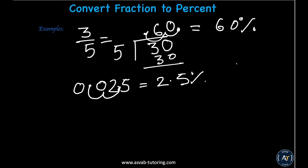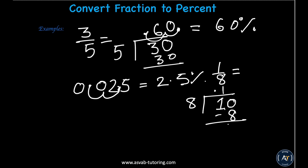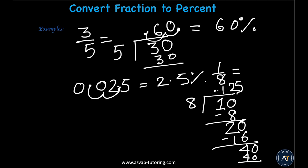For 1 over 8, first convert to decimal. 8 goes outside and 1 goes inside. Put a decimal and get a zero — 8 goes into 10 once, giving 8, subtract to get 2. Bring down a zero: 8 goes into 20 twice, giving 16, subtract to get 4. Bring down another zero: 8 goes into 40 five times — so the decimal is 0.125. Move two decimal places to get 12.5 percent.